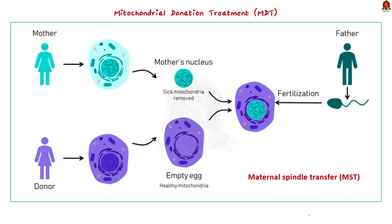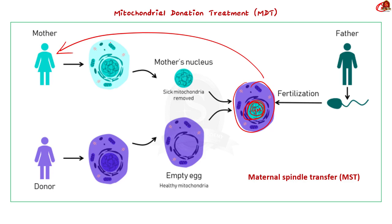In mitochondrial donation treatment, the mother's nuclear genetic material from an egg or oocyte with diseased mitochondria is transferred into a donor egg that has healthy mitochondria. The donor's original nuclear genetic material is removed. After the transfer, the donor's egg contains the mother's genetic material and the donor's healthy mitochondria. This final product is then implanted in the uterus of the mother, who carries it to full term to yield a baby. The healthy mitochondria allow normal development and stop the transmission of mitochondrial disease, so the baby will be free from the mother's mitochondrial disease. This process is known as MDT, also called mitochondrial replacement therapy or MRT.